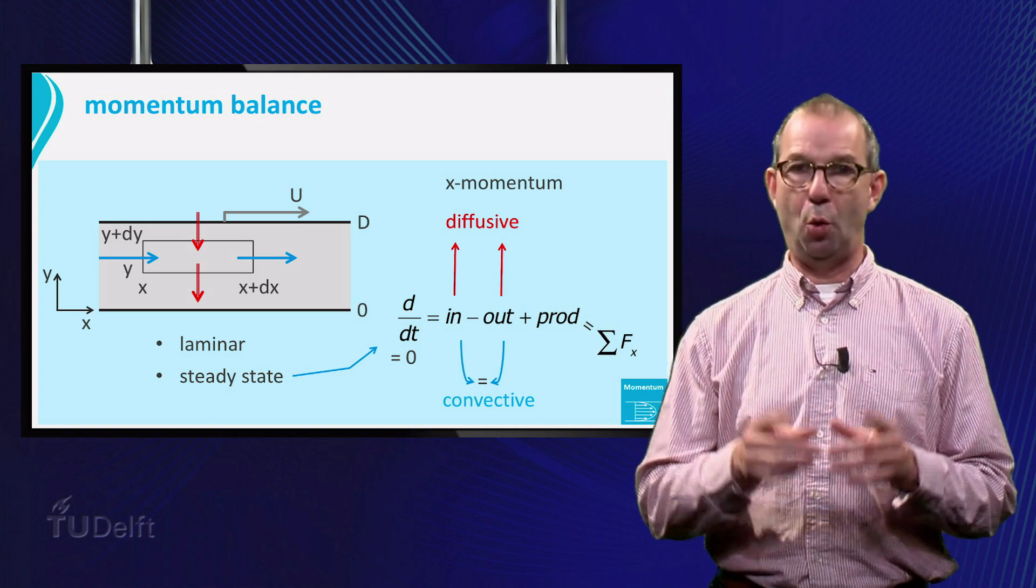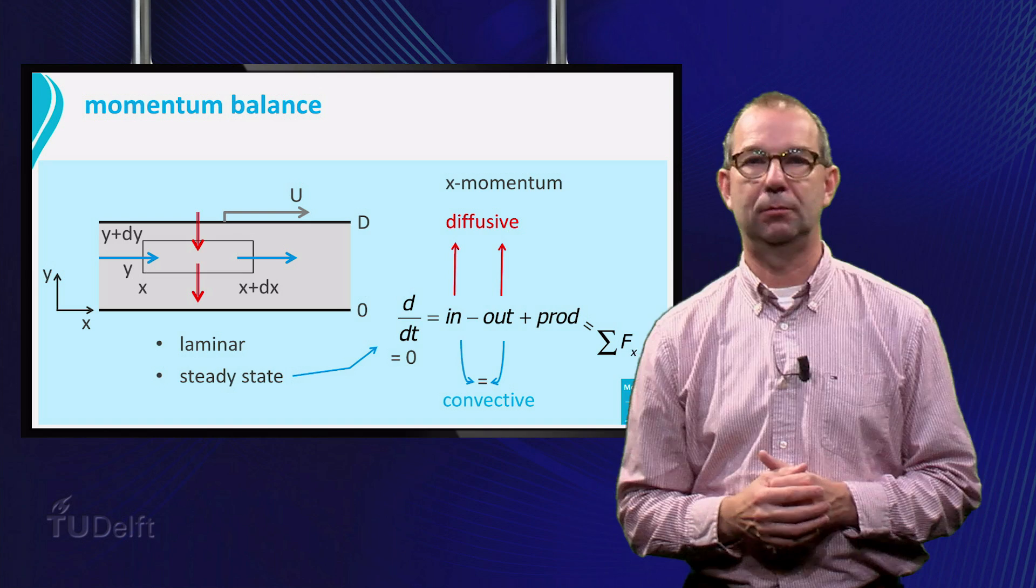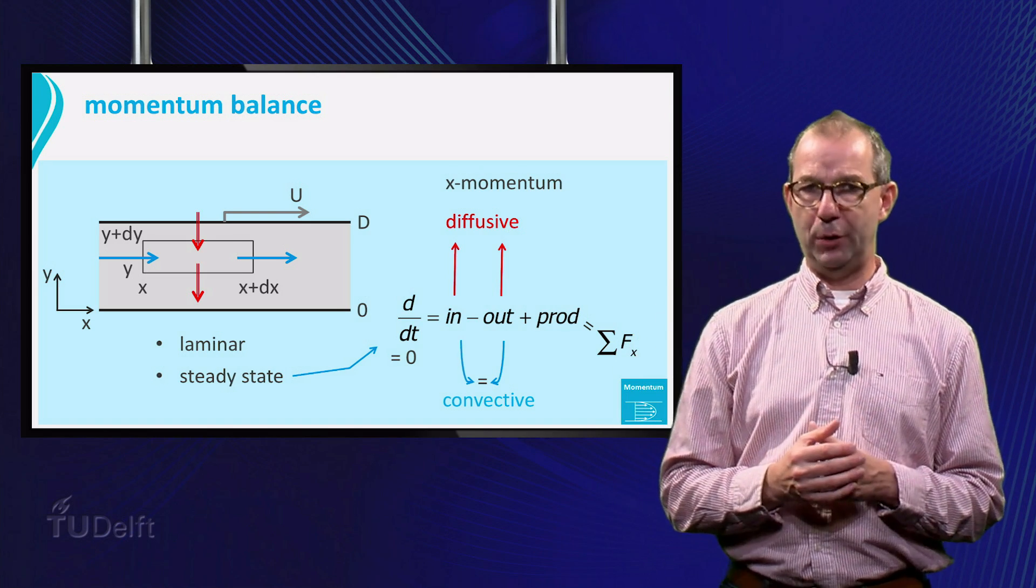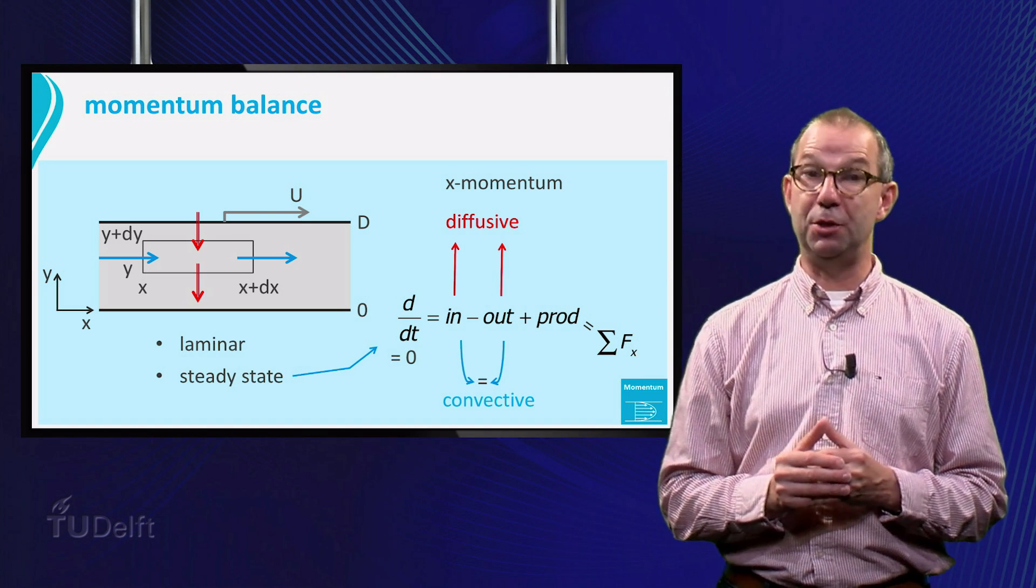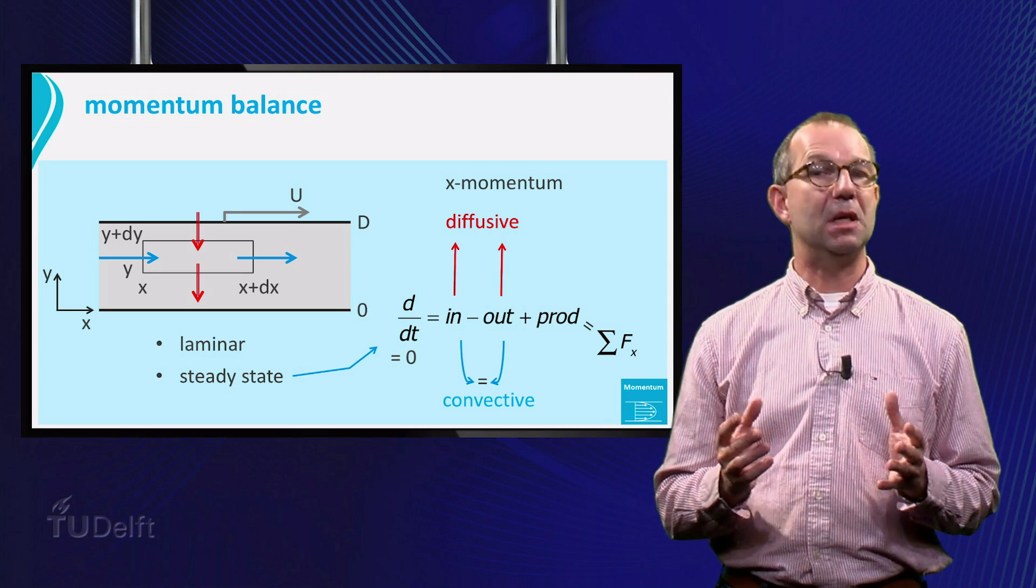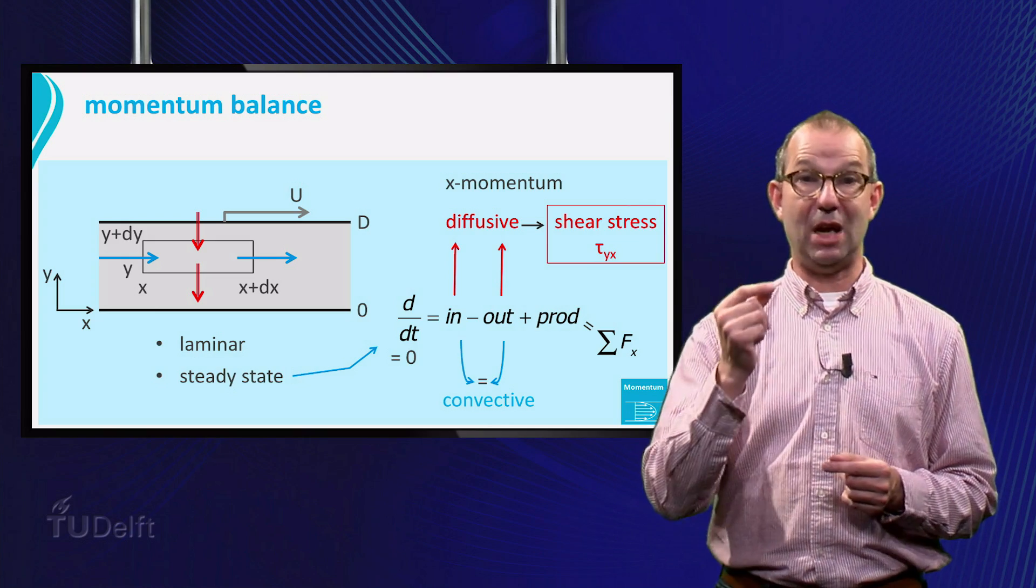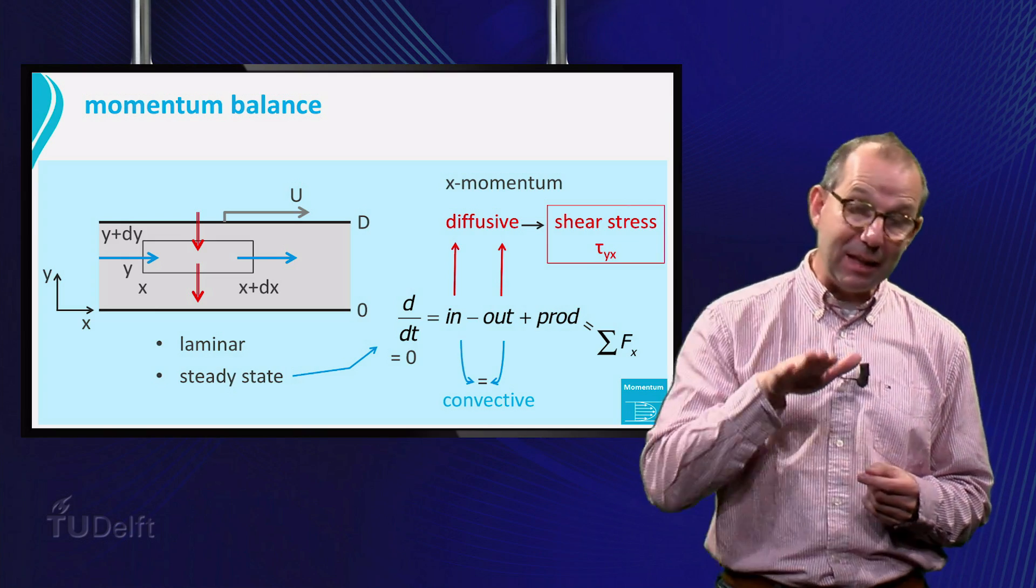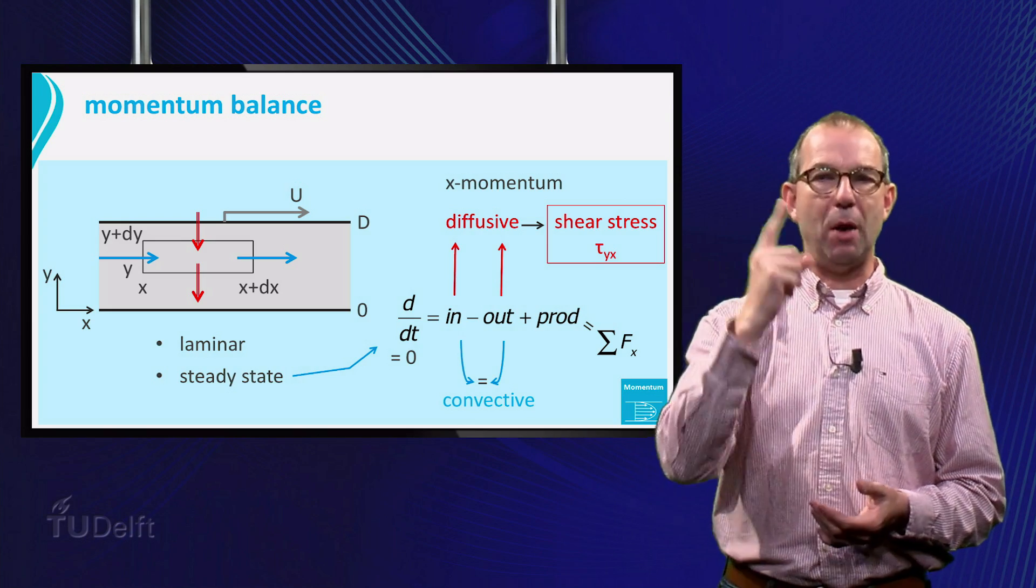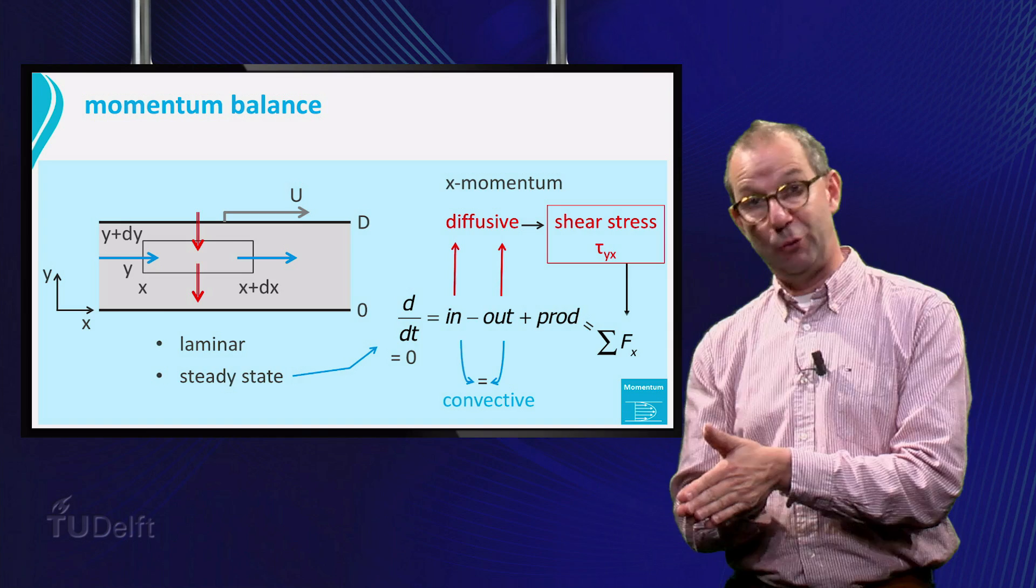Finally we have for the production all forces acting in the x-direction. The diffusive flows can be described by Newton's law from the previous sheet. However, it is more intuitive to write this as friction, that is as shear stresses acting in the x-direction. From now on we will denote them by tau and move them over to the forces.